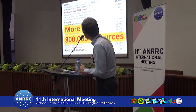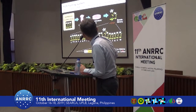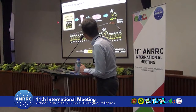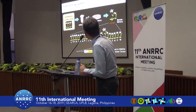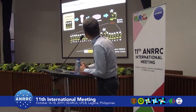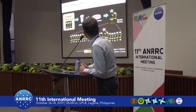When we talk about the Arabidopsis FOX lines in more detail — the FOX hunting system is what we developed. We have the Arabidopsis full-length cDNA clones, and these clones are transferred into Agrobacterium to make an Agrobacterium library. Using the Agrobacterium library, we infect the Arabidopsis plant to randomly overexpress the Arabidopsis genes. Then we make the FOX lines.